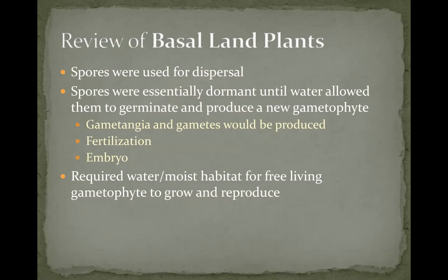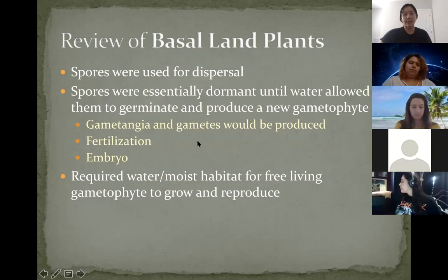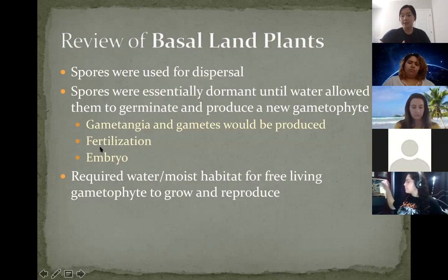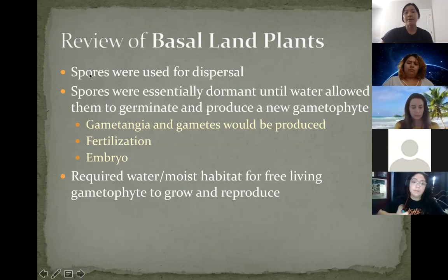The gametangia for the basal land plants would be the archegonia, which is the female reproductive structure, and the antheridia, which is the male reproductive structure. Those two would produce gametes — the archegonia would produce the egg and the antheridia would produce the sperm. They'd come together, undergo fertilization, and produce a diploid embryo. That diploid embryo would then produce a new diploid sporophyte, which would undergo meiosis to produce the haploid spores.